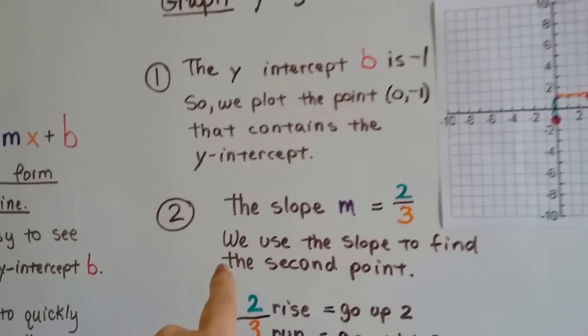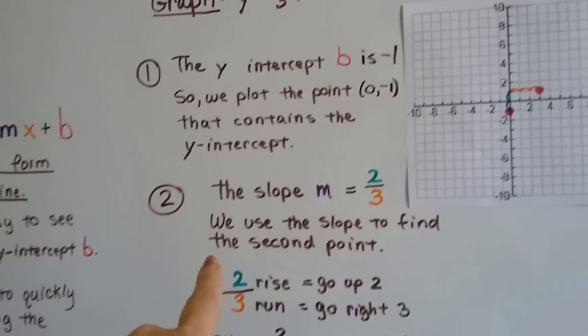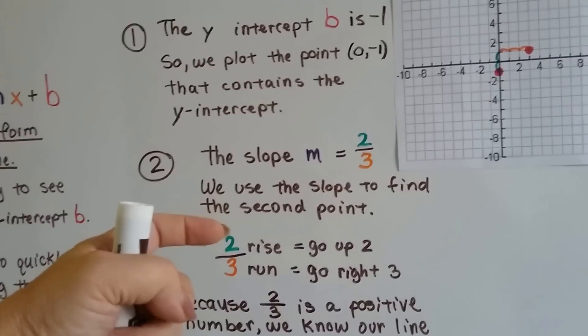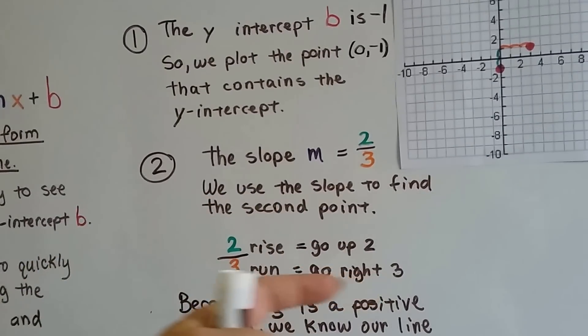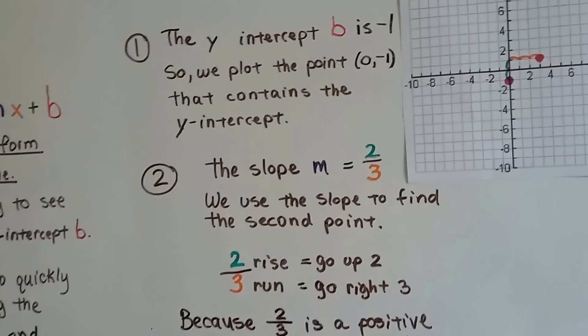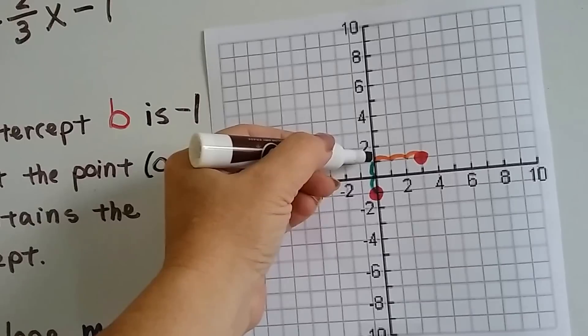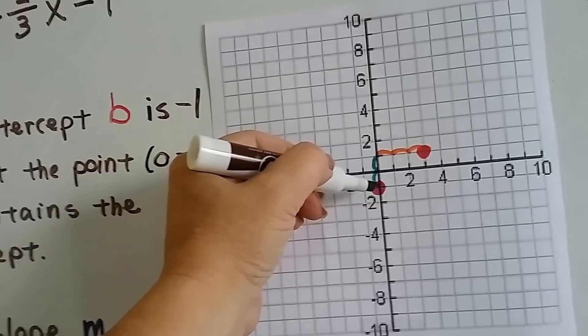It says the slope is 2 thirds, 2 over 3. So we use the slope to find the second point. That's the rise over the run. So that says that we have to rise by 2, so we go up by 2, and then we have to go right by 3. We run sideways 3. So we go up by 2, 1, 2. The green is always the rise for me, and the orange is always the run.